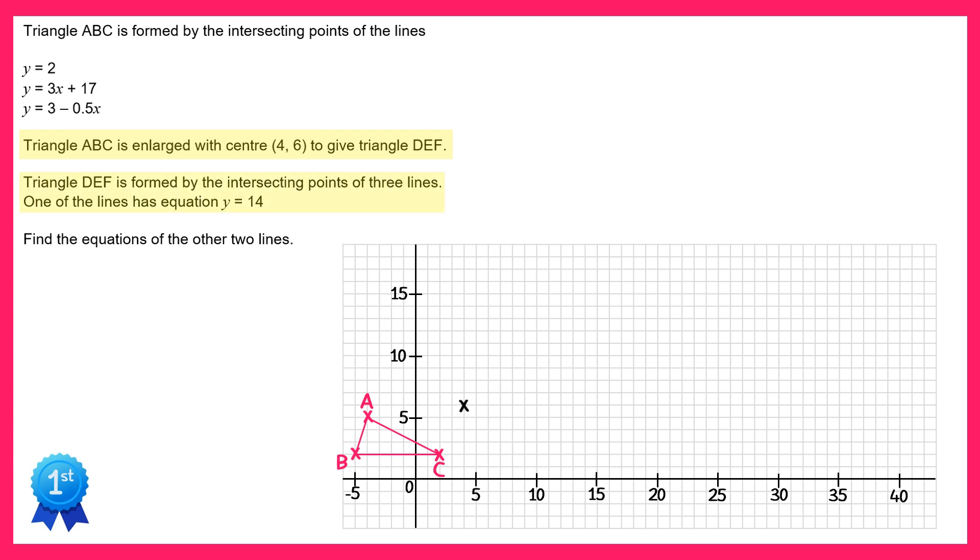We're told that triangle DEF is formed by the intersecting points of three lines and we're given one of those lines. The line we're given is y equals 14. So let's mark that on.